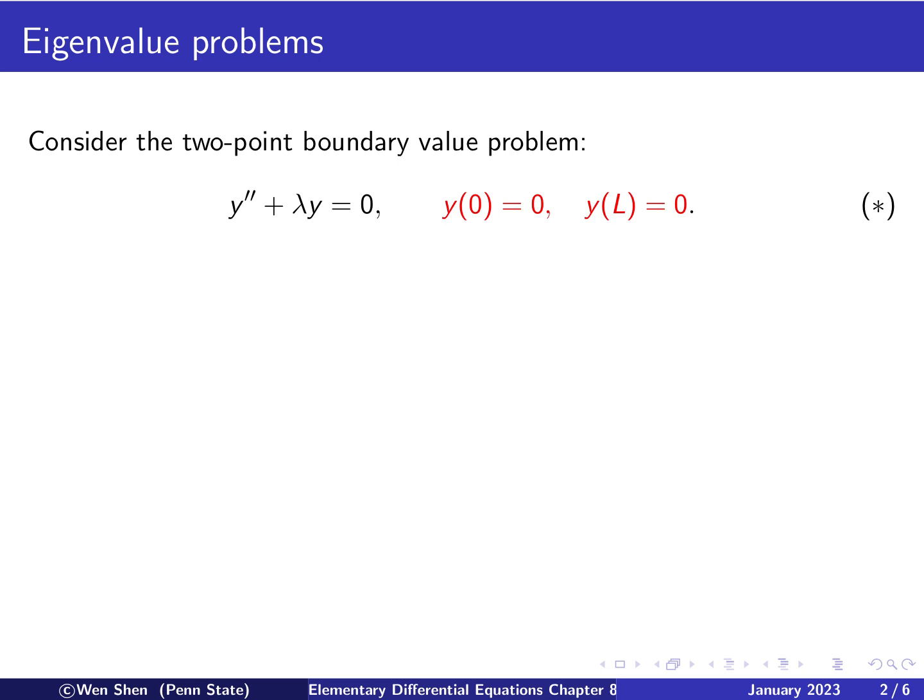We now introduce the eigenvalue problems. Let's take a first example. Let's consider the two-point boundary value problem as follows. So we have y'' + λy = 0. Here lambda is a constant, a number, and y is a function of x. And then boundary values are given at x = 0 and x = L, where L is just a constant. And here they are given as 0 at the two boundary points.